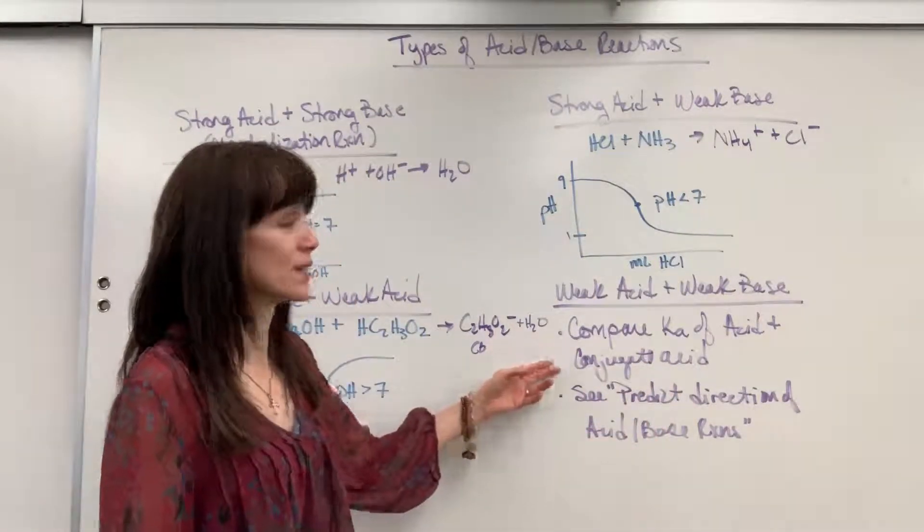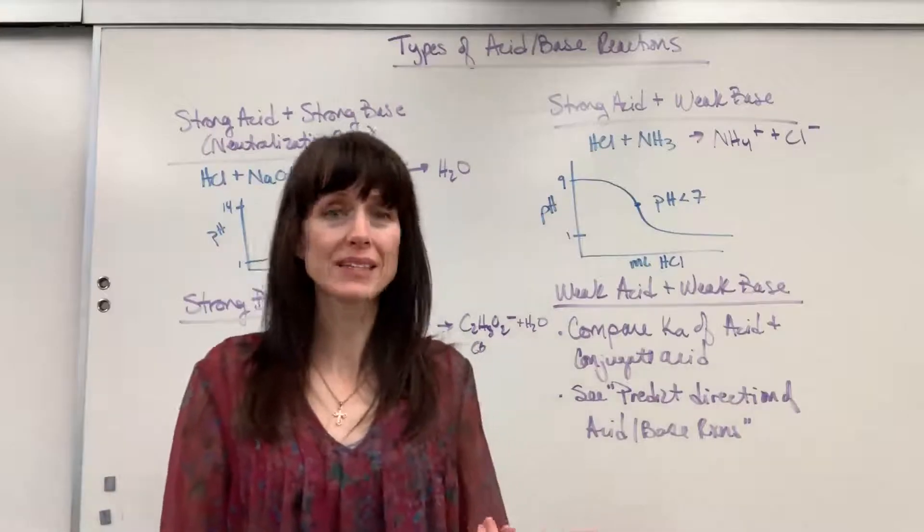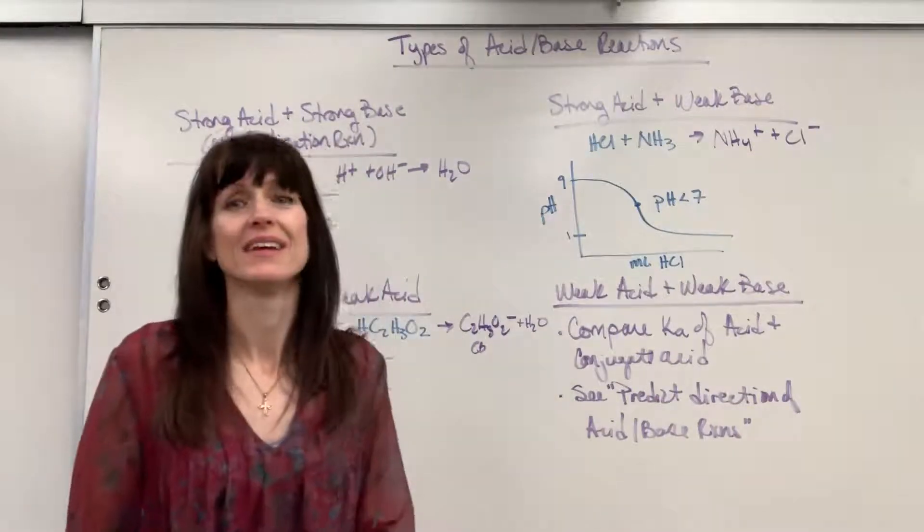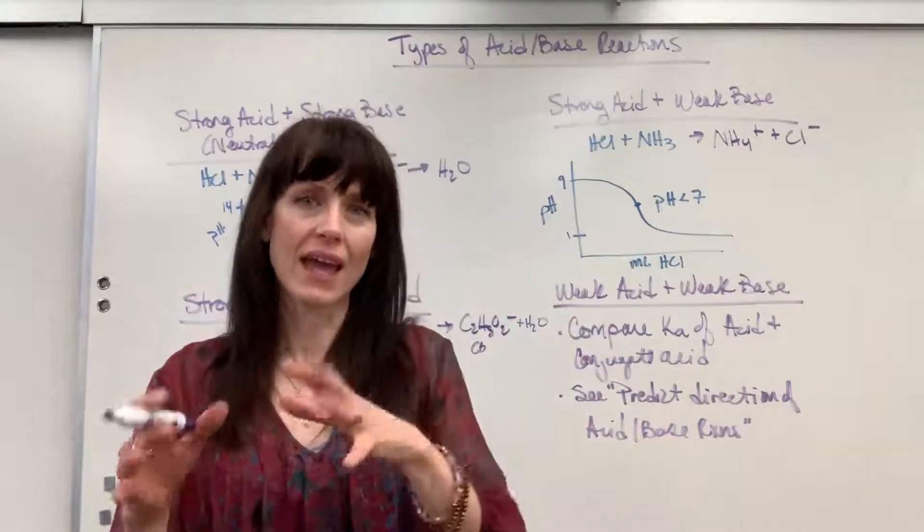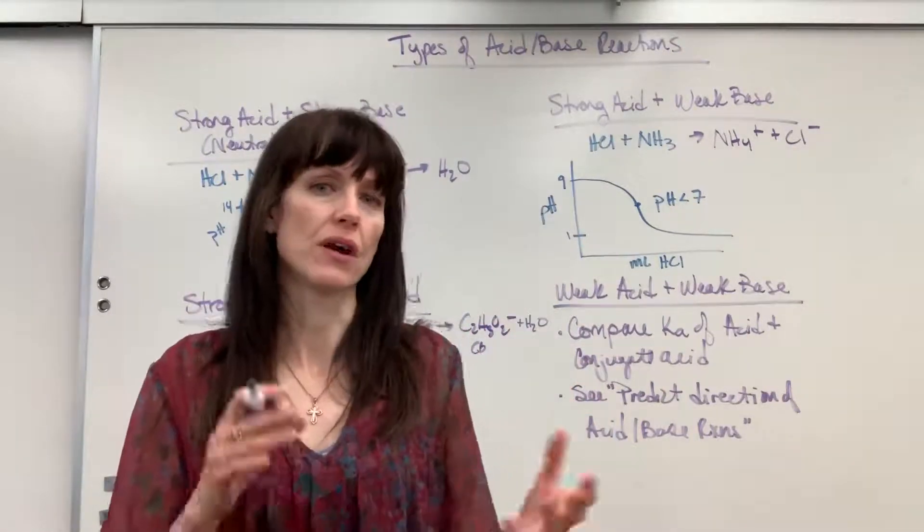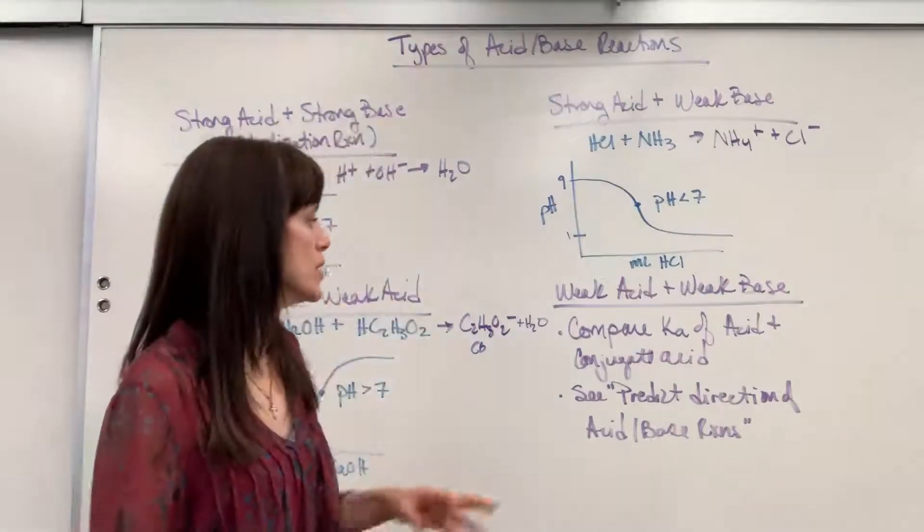So really, your takeaway on this, if you have a weak acid and a weak base, you need to look at the ionization constants, the Ka and the Kb values. Look at Ka or Kb, and you can figure out what's going to happen with that reaction. So you need a little bit more information on this.